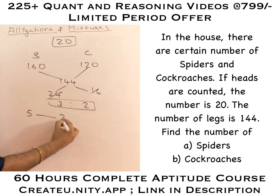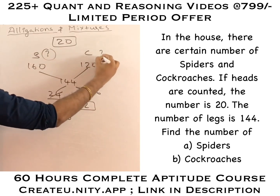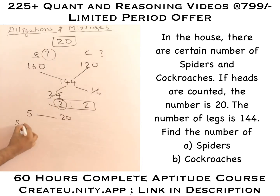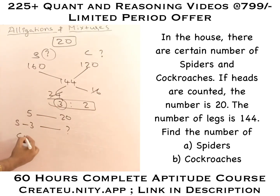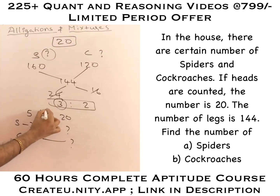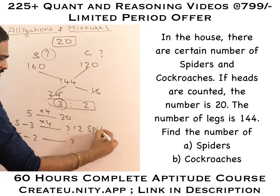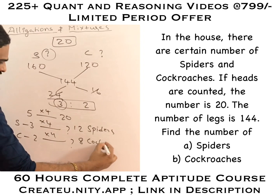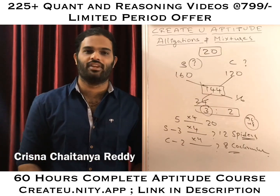Total 5 parts is 20. He is asking me to find out total spiders and also total cockroaches. Total spiders is 3 parts — 3 parts is how much? Total cockroaches is 2 parts — 2 parts is how much? 5 fours are 20, then 3 fours will be 12 spiders, and 2 fours will be 8 cockroaches. Very interesting questions which are asked many times in examinations. You have to be very careful in answering them.